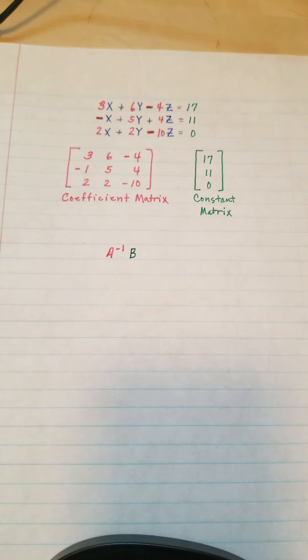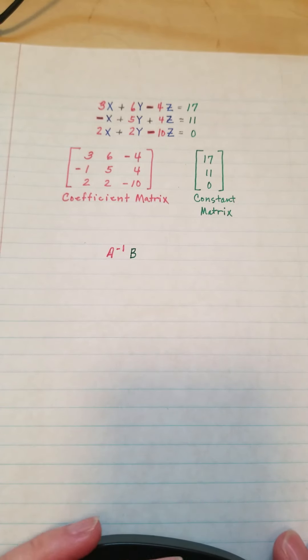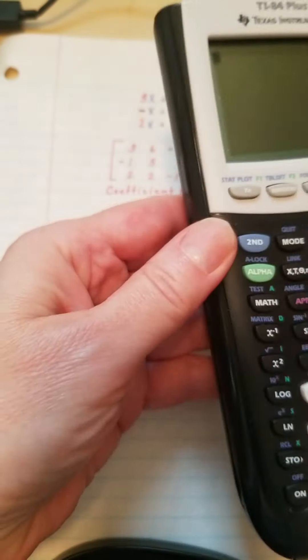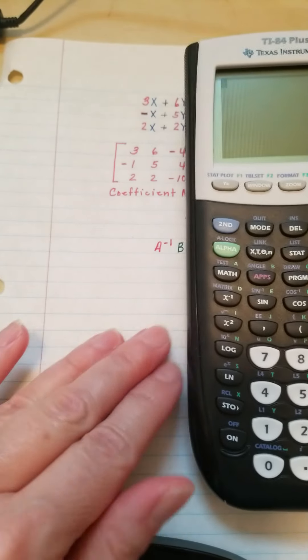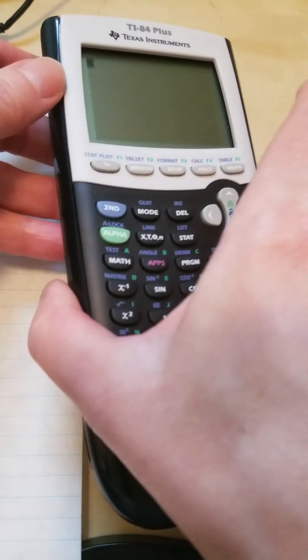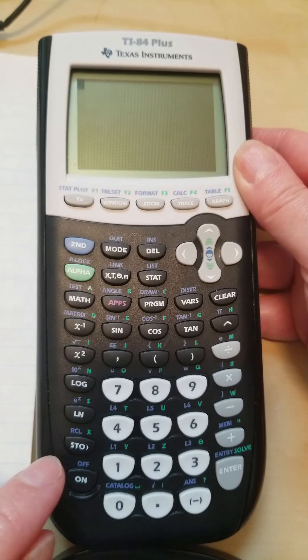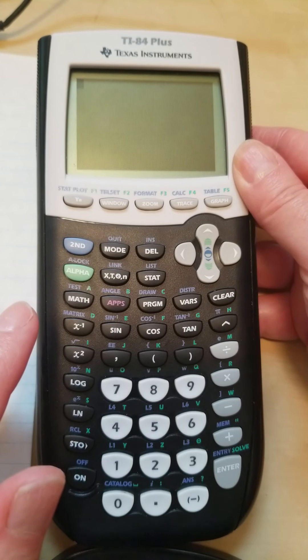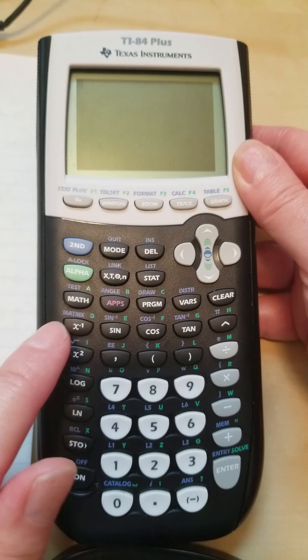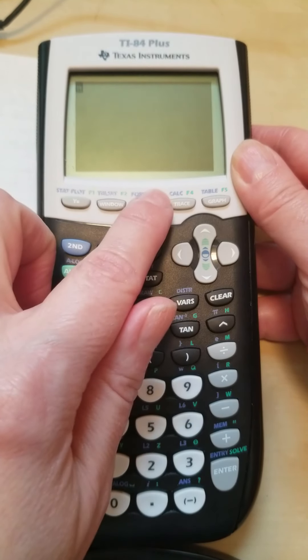So the next thing we have to do is figure out how to get this into our calculator. We want to enter both of these matrices. So I have my calculator here, and I'm going to reposition things a little bit. The first thing I want to do is access a matrix template, and the way I'm going to do that is press the alpha button and then zoom.